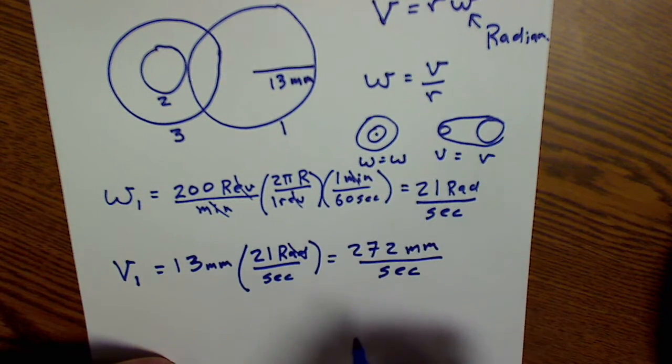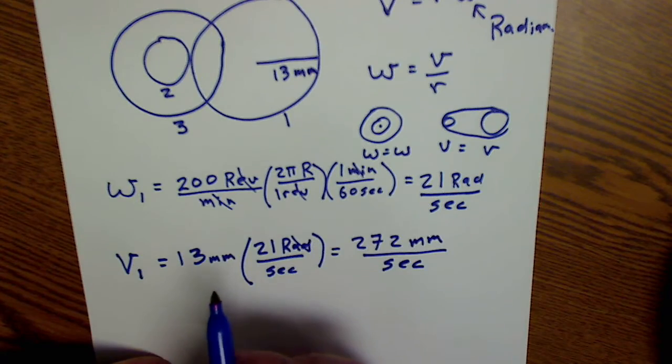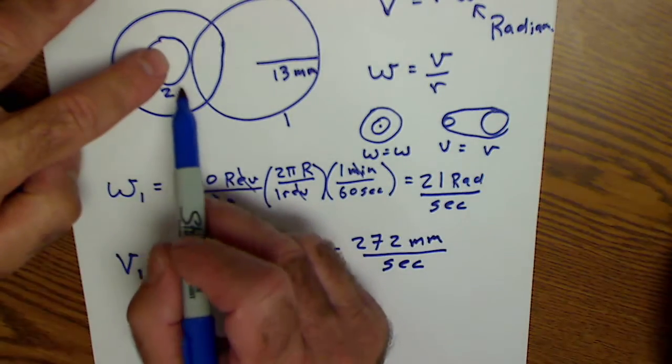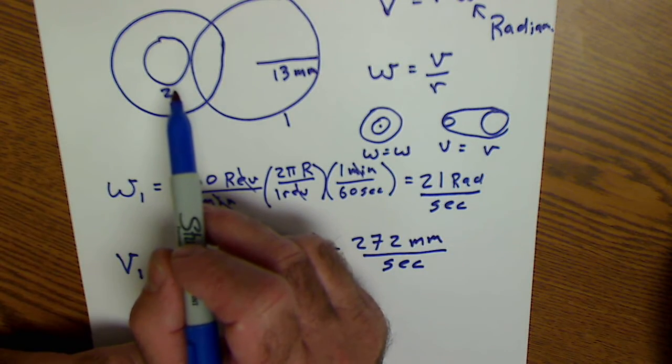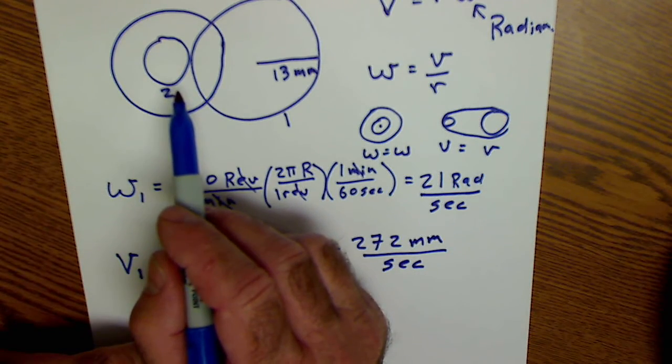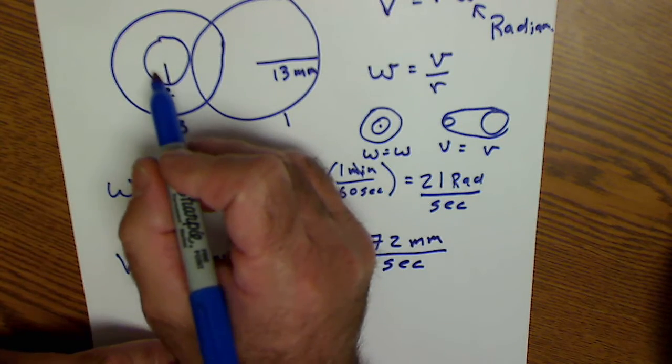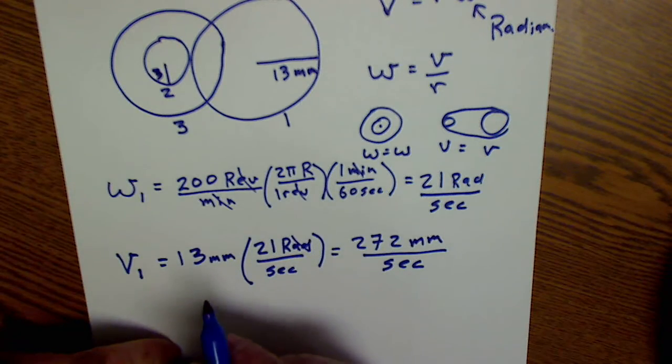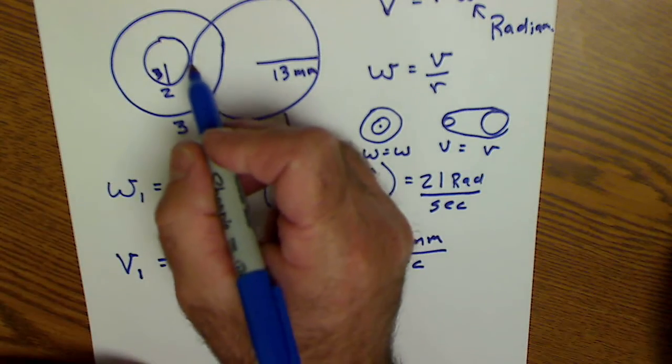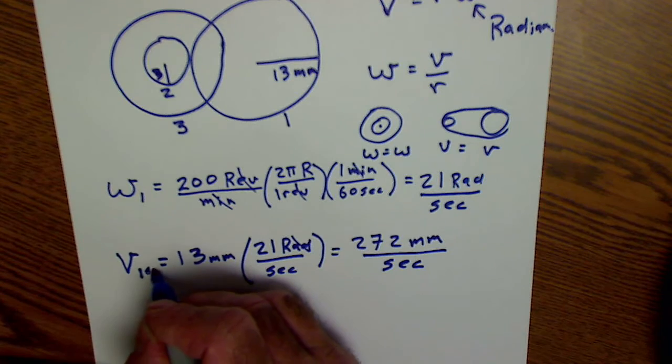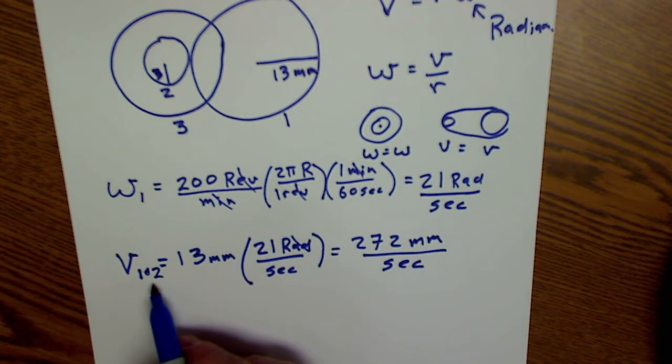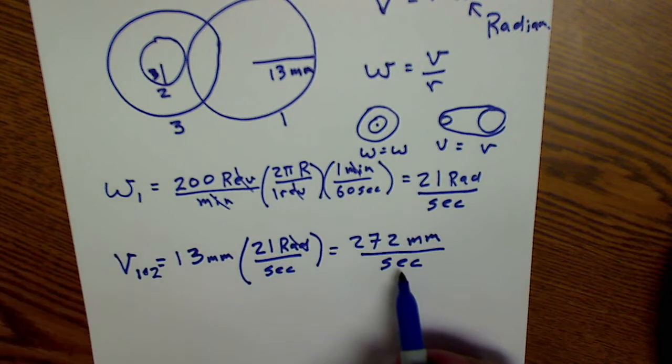Part C of the question says, gear one's teeth mesh with gear two's teeth. So these two gears right here touch. They have to have equal linear velocity. The radius of gear two is three millimeters. I'll write that down. What's the linear velocity of gear two? Well, if they touch and the gears mesh, they have to have equal linear velocity. So that's the answer. Linear velocity for gear one and gear two is 272 millimeters per second.